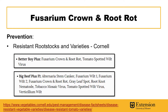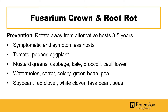These are some snips from a Cornell publication that shares resistant rootstocks and varieties of tomatoes. You can see that Better Boy Plus and Big Beef Plus are labeled resistant to Fusarium crown and root rot, as well as some other diseases and viruses.